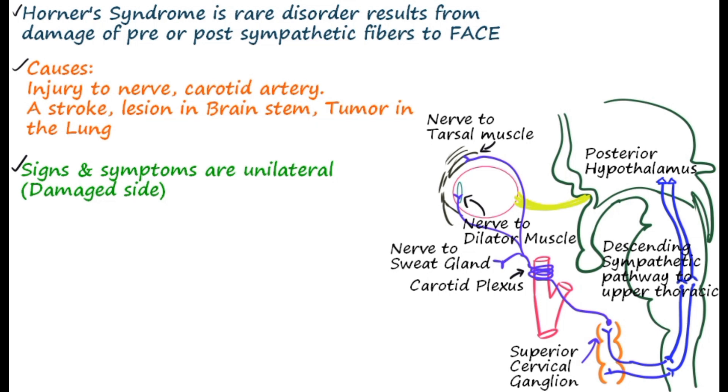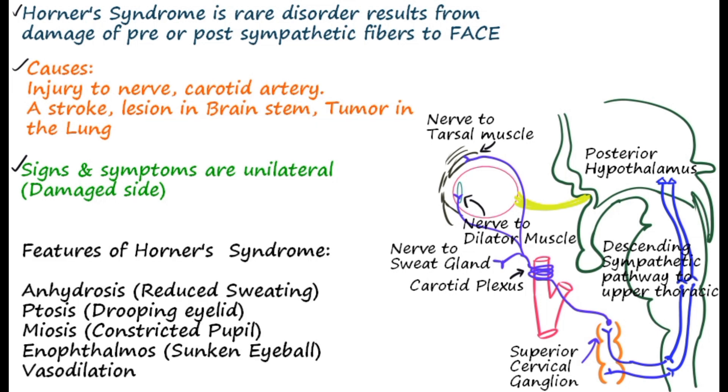Signs and symptoms of Horner syndrome usually seen on the damaged site. The features include anhydrosis (reduced sweating), ptosis (dropping of the eyelid), miosis (constriction of the pupil), enophthalmos (shrunken eyeball), and vasodilation.